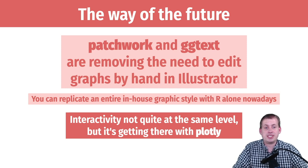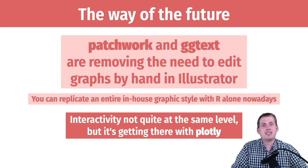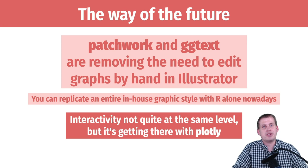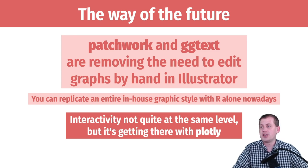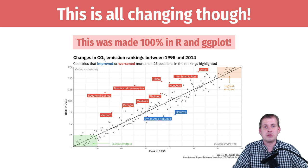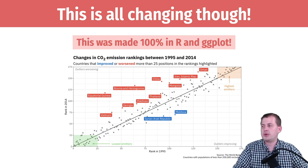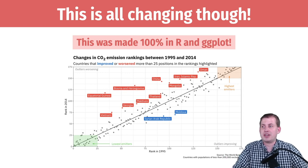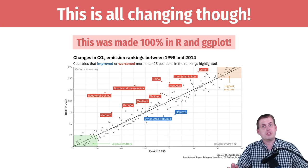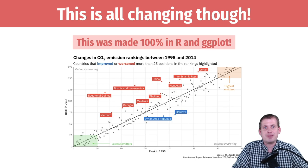So the moral of the story for today's session: in the past it was very important to understand Illustrator and make everything perfect there — that's still important if you want perfect control over every tiny design element. But if you use all the different annotate layers, ggtext for making specific things bold, italicized, adding backgrounds to text boxes, superscripts — all of that was impossible before ggtext — you can basically make publication-worthy graphics directly in R without ever touching vector editing software. On that note, your exercise today will have you deal with some vector editing software just so you can see how it works. Good luck!